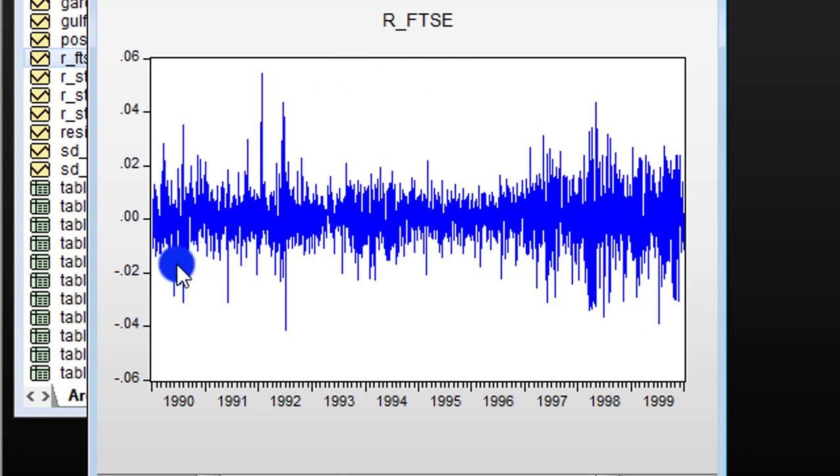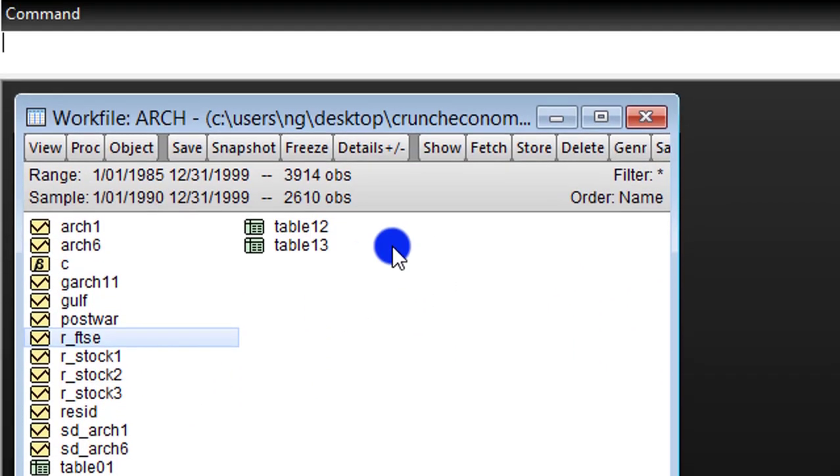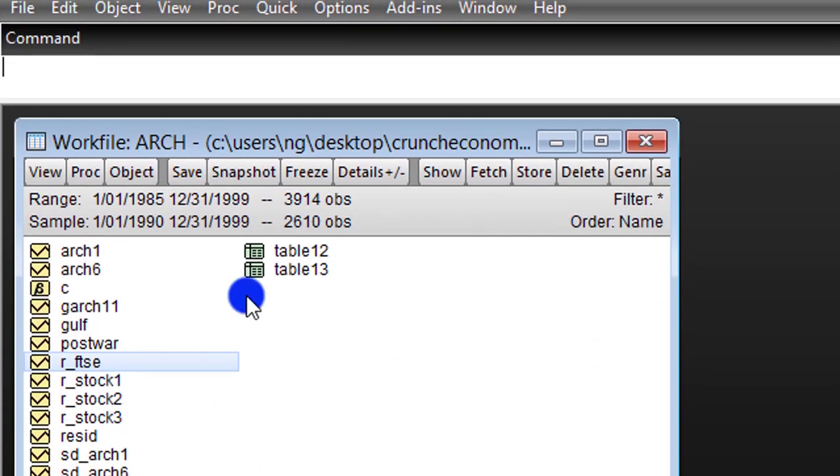Here is a plot of the returns of the FTSE stock. As you can see, it evidences volatility clustering. So having plotted the series, the next thing is to test for the presence of ARCH effects.